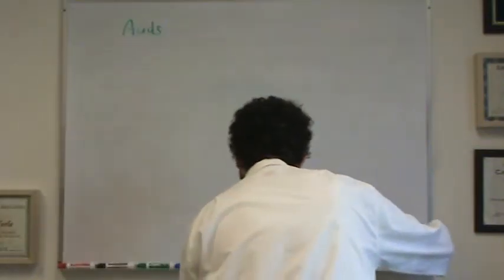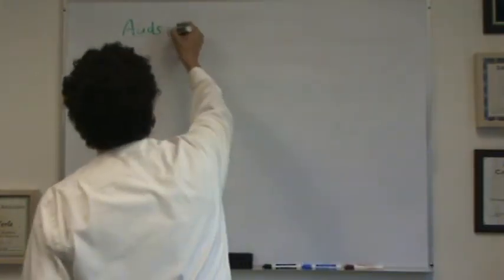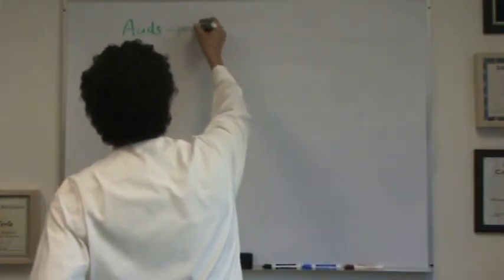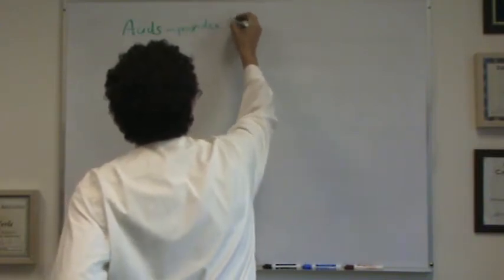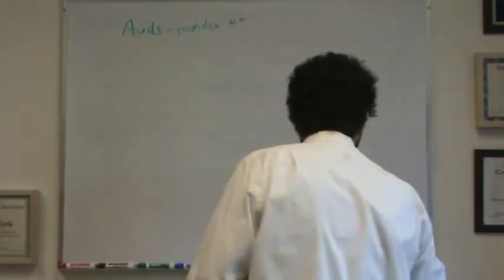The main definition that you want to know is an acid provides or donates H+. Think about H+ for a second. How many protons are in H+? Well, on the periodic table, it has atomic number 1, so there's 1. Since there's H+, there's no electrons. And the mass number is also 1. That means there's no neutrons. So H+ is just a proton. So an acid donates a proton.